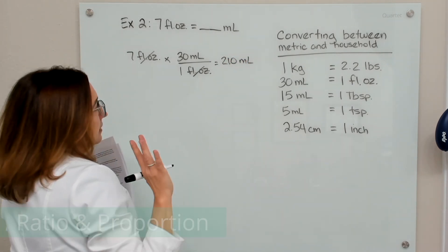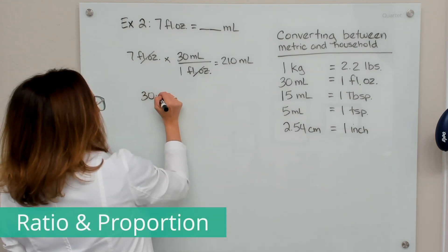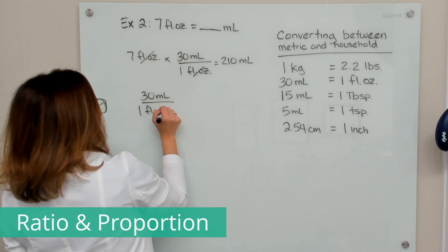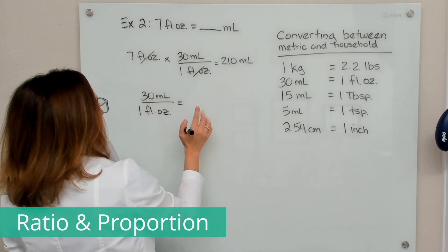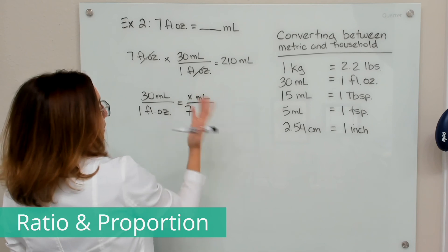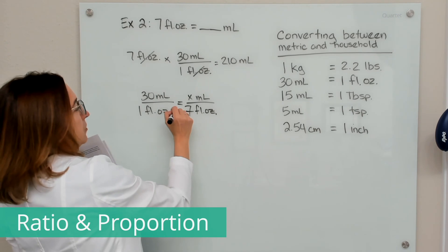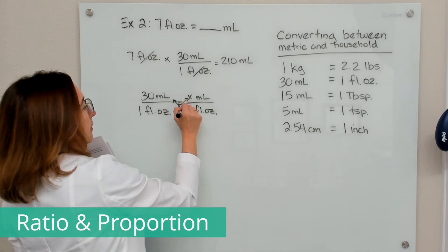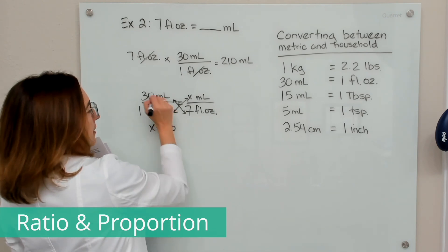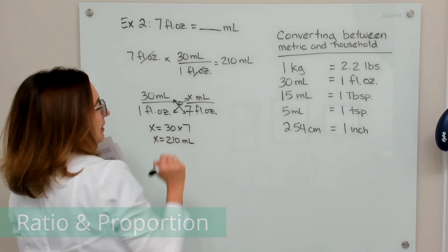We can solve the same problem using ratio and proportion. We set up our known ratio: 30 milliliters equals one fluid ounce. On the other side, we're looking for the milliliters in seven fluid ounces. We cross multiply: x times one is x, and 30 times seven gives us x equals 210 milliliters.